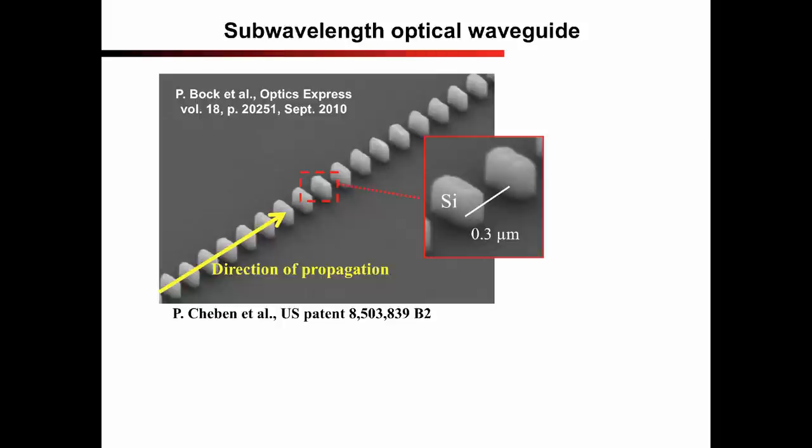However, in our subwavelength waveguide, light efficiently propagates forward, as if the waveguide was perfectly continuous, in other words, as if we fused all the segments together into a continuous, uninterrupted line.